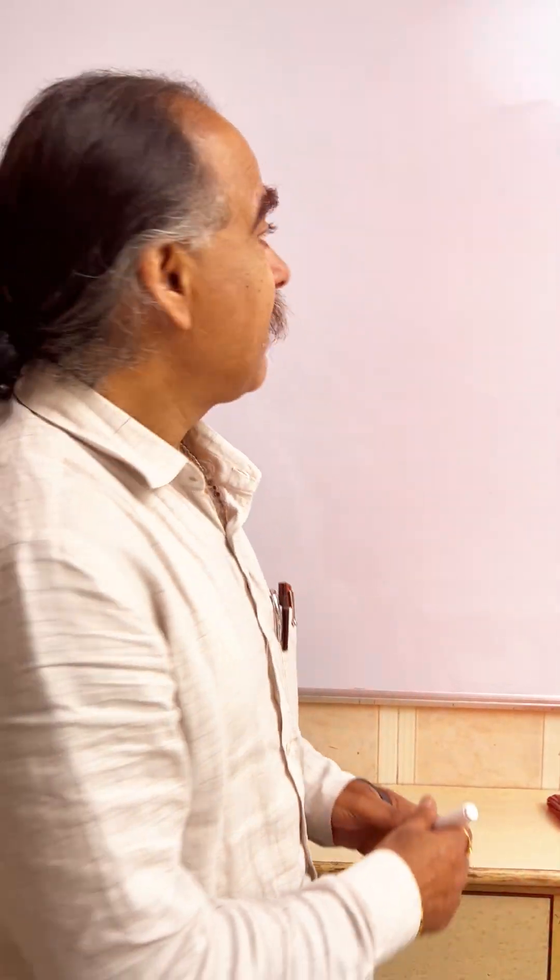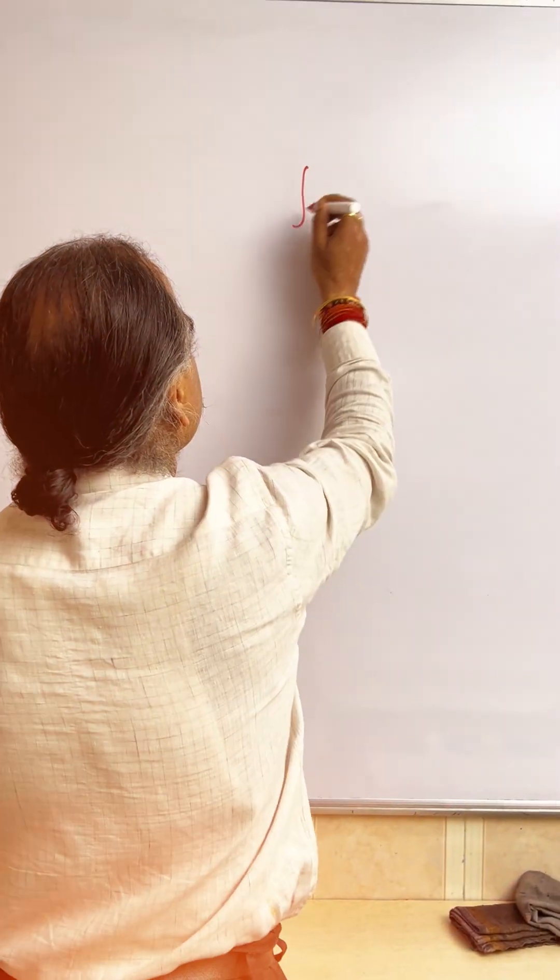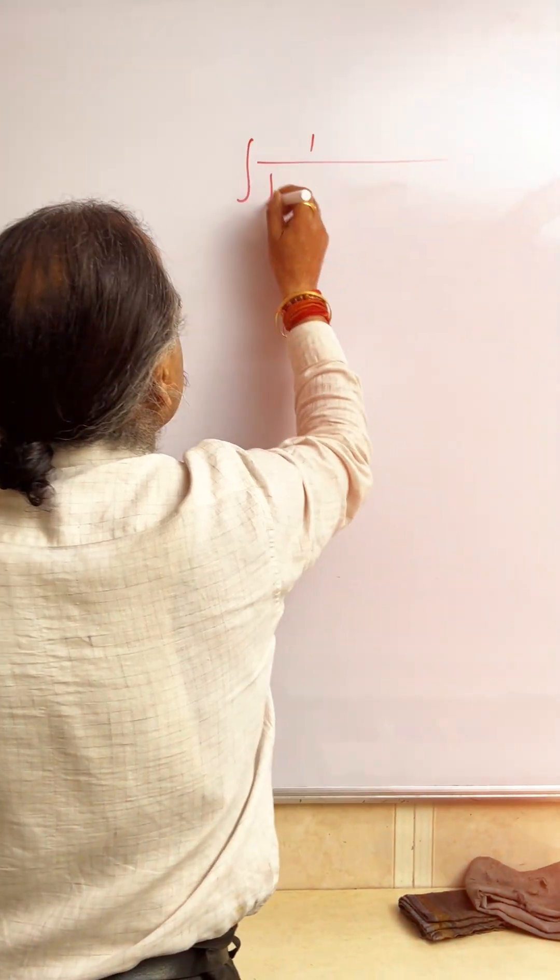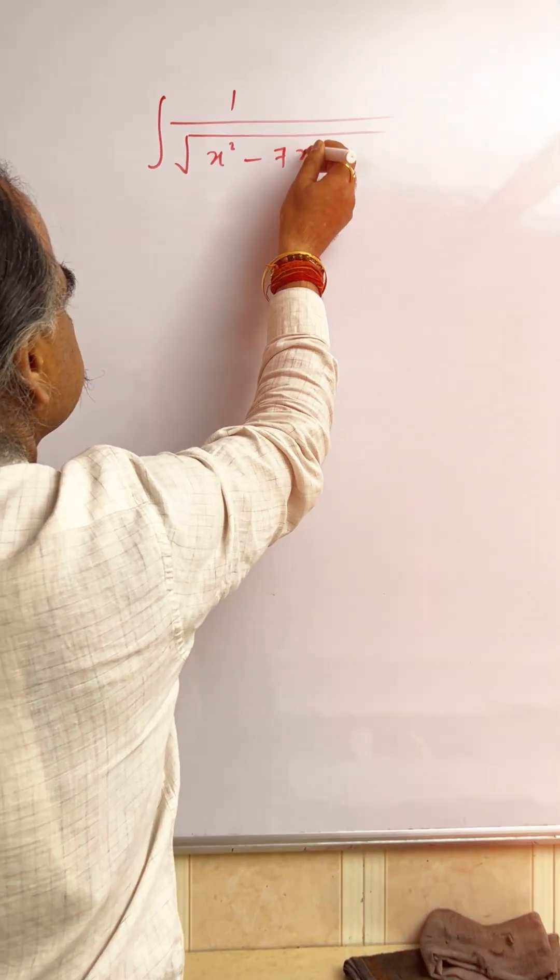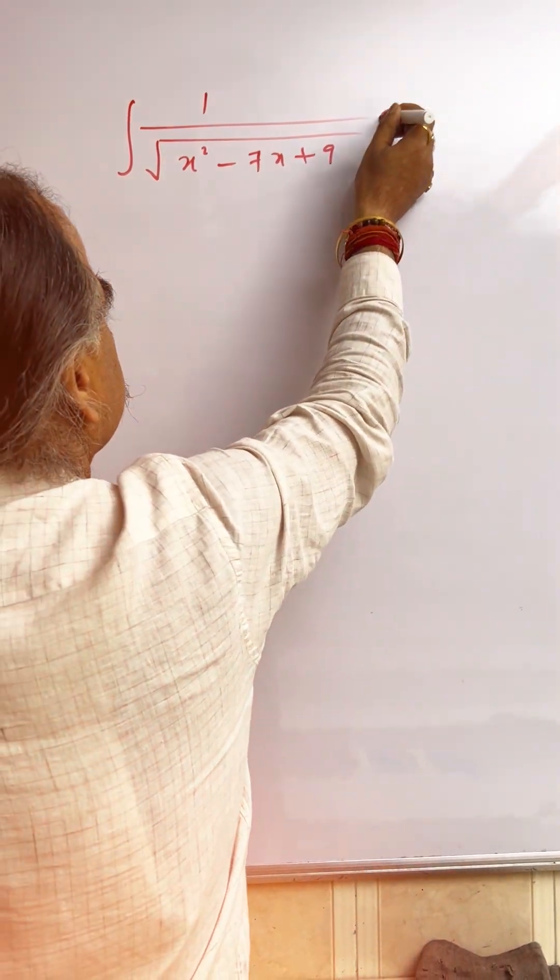Good morning students. How to find the integral of 1 upon root x square minus 7x plus 9 dx?